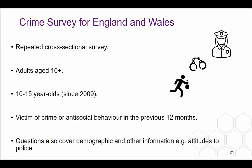We will have a look at the Crime Survey for England and Wales in a bit more detail. It is an example of a repeated cross-sectional survey used to look at aggregate population changes over time. It samples those aged 16 and above, and since 2009 a smaller sample for those aged between 10 and 15 was added. The survey collects information on whether participants have been victims of crime or antisocial behaviour in the last 12 months, and also covers topics such as demographics and participants' attitudes towards the police or the criminal justice system as a whole.